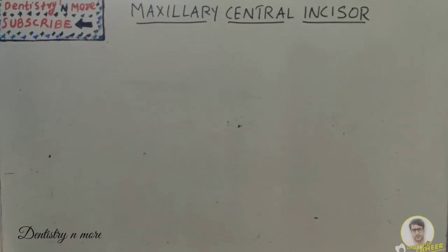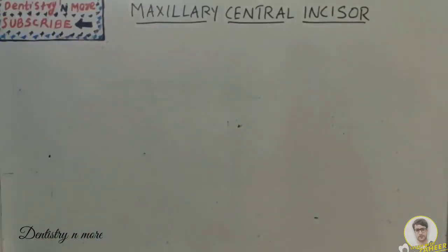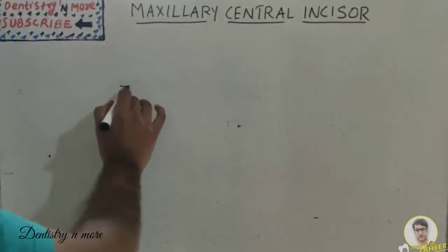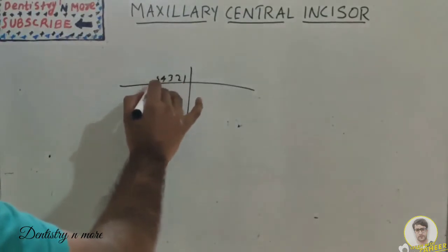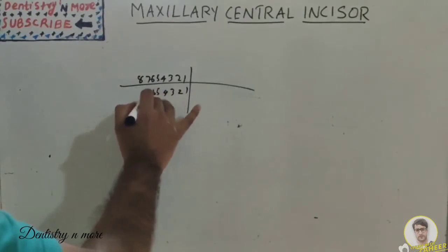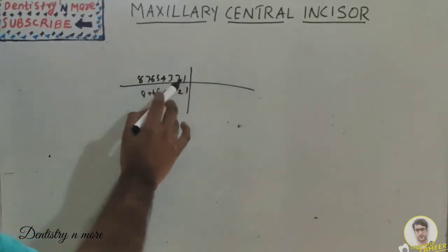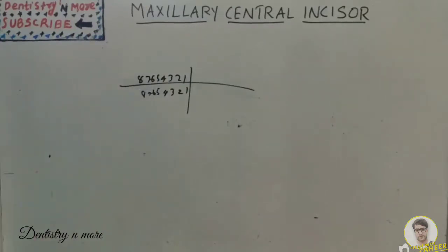Hello everyone, welcome back to another session in dentistry. In dental anatomy, we need to learn 16 teeth anatomy — from central incisor to third molar. Eight teeth will be in the maxilla and similarly eight in the mandible: central incisor, lateral incisor, canine, first premolar, second premolar, first molar, second molar, and third molar.